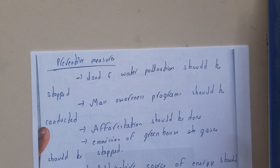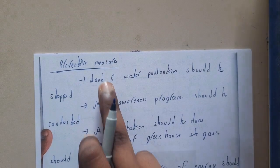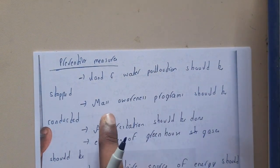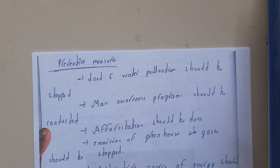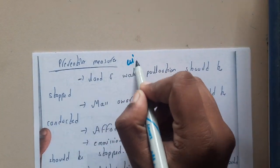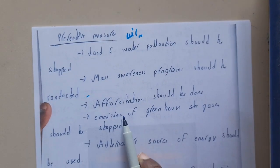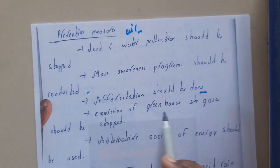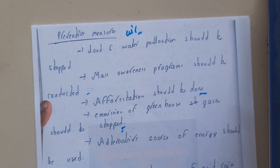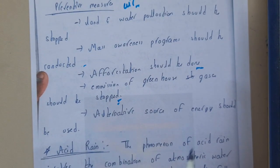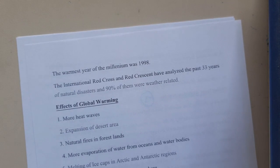To prevent global warming, land and water pollution should be stopped, and air pollution such as releasing smoke into the air should also be reduced. Mass awareness programs should be conducted. Afforestation — planting trees — should be done. Emission of greenhouse gases like carbon dioxide should be reduced. Alternative sources of energy should also be used.